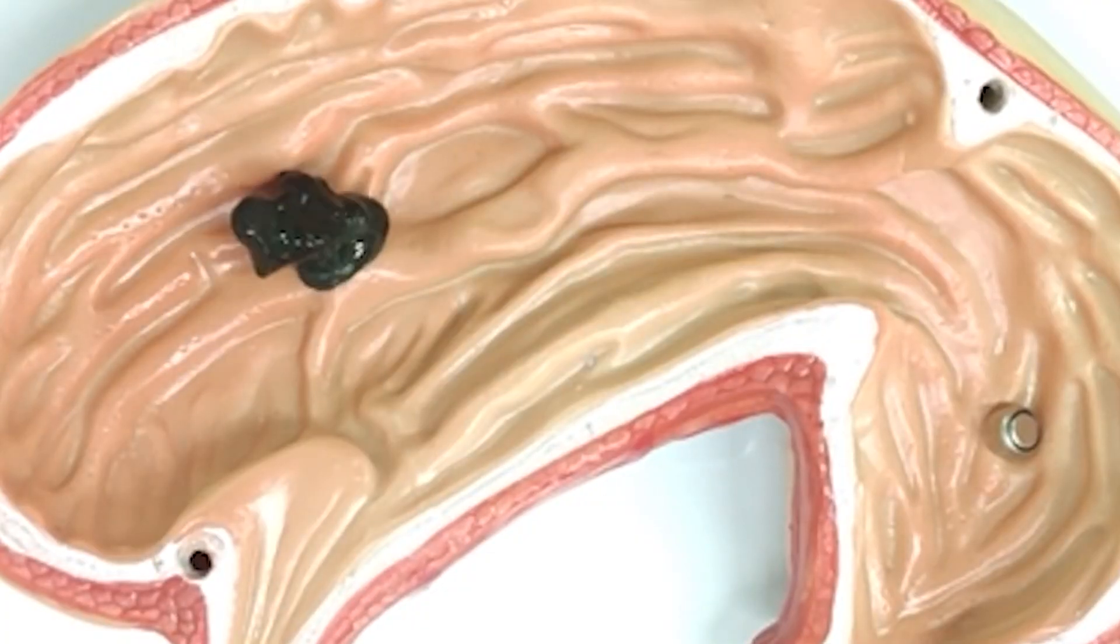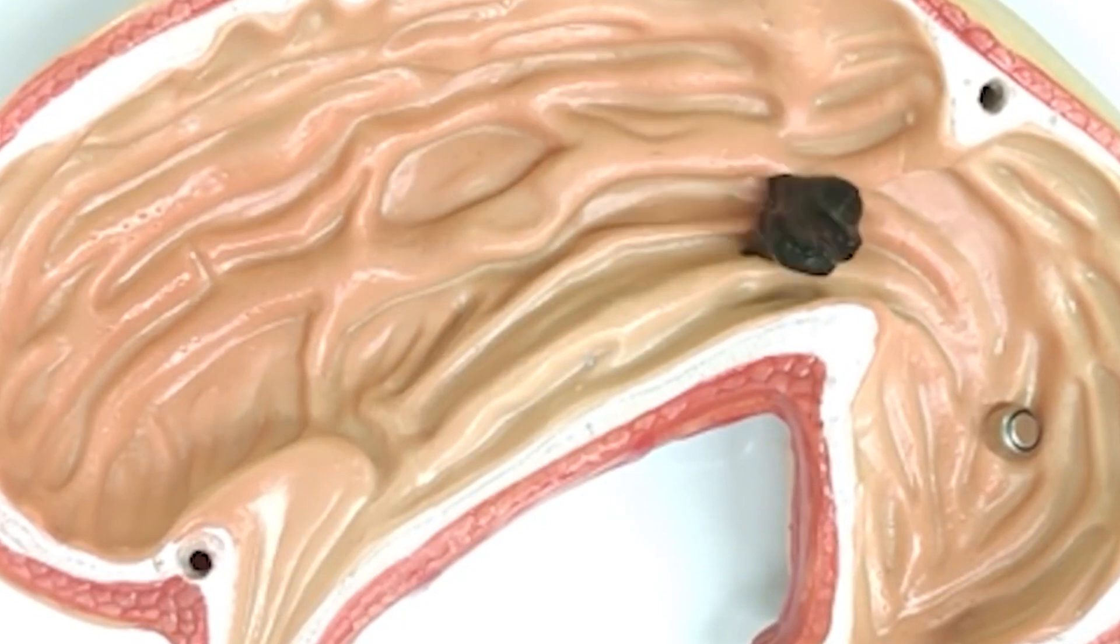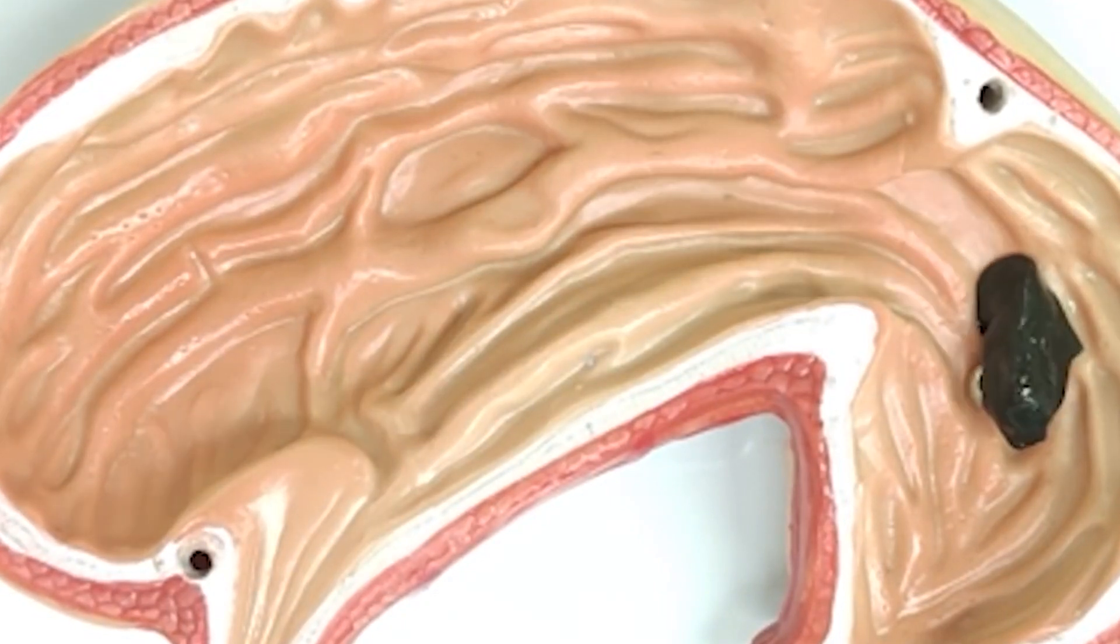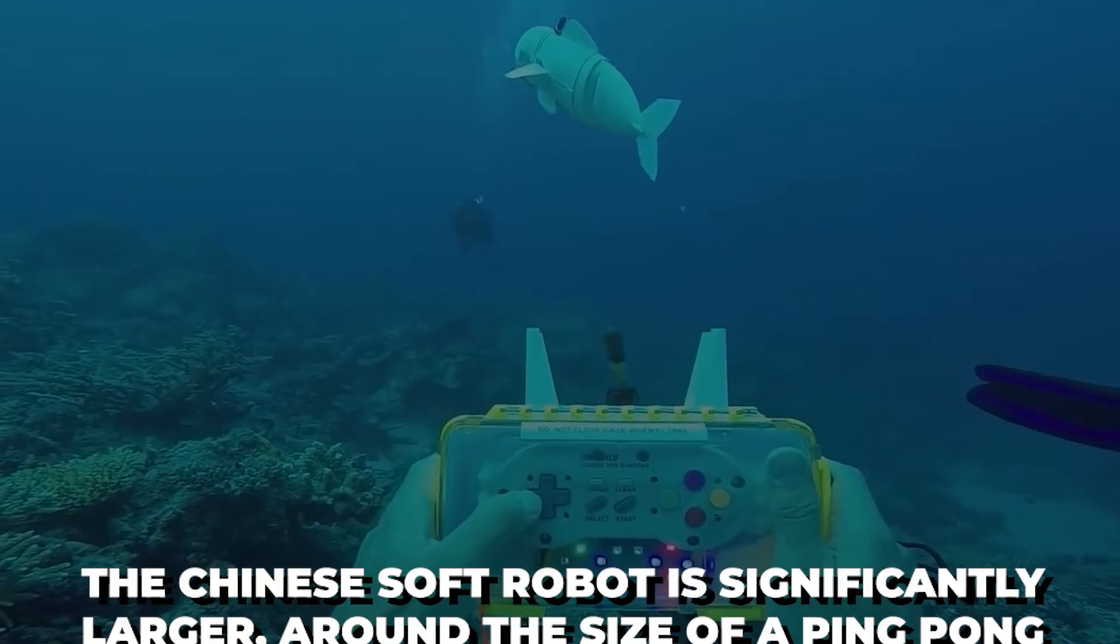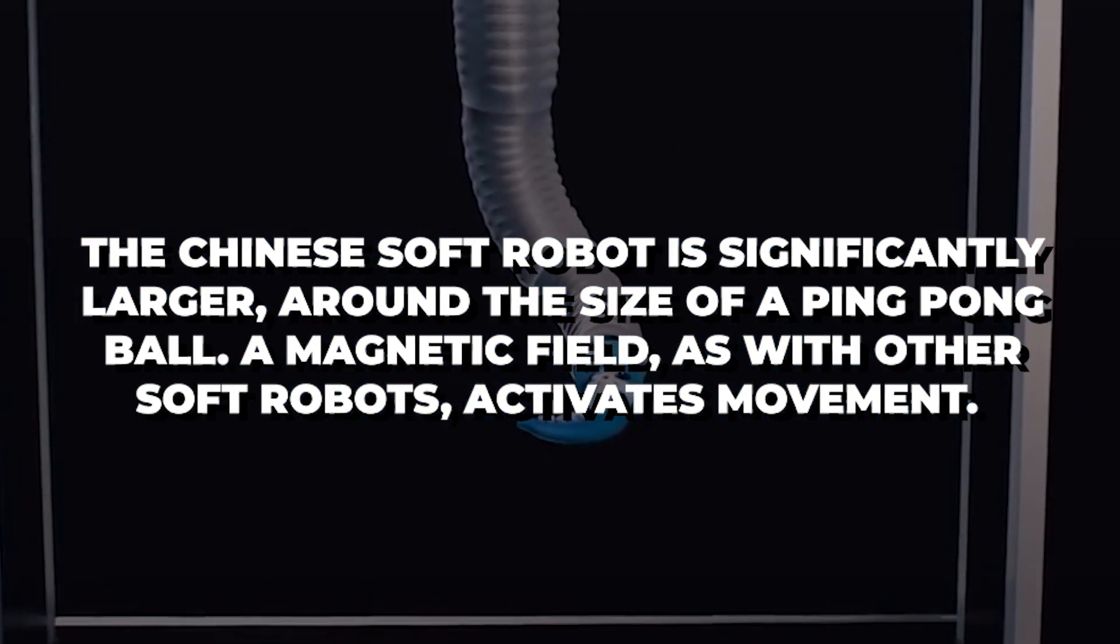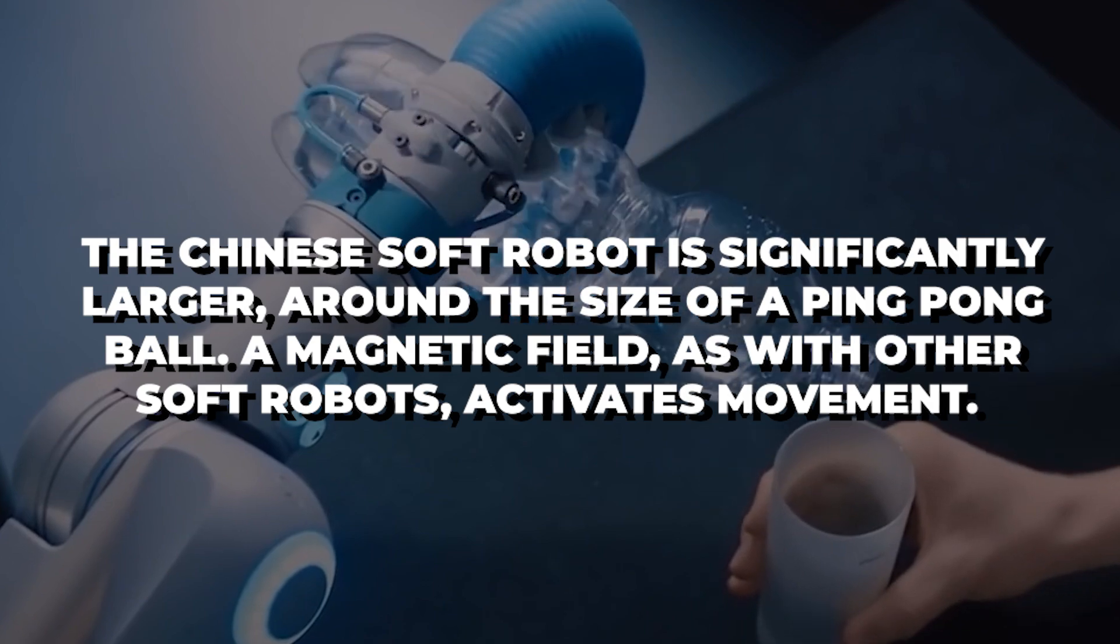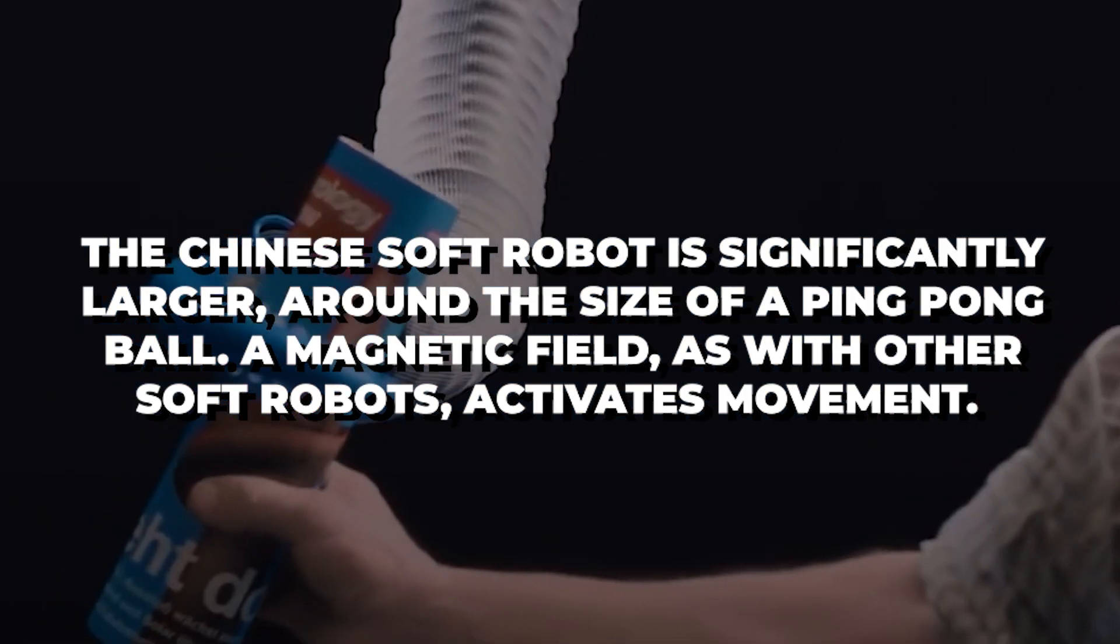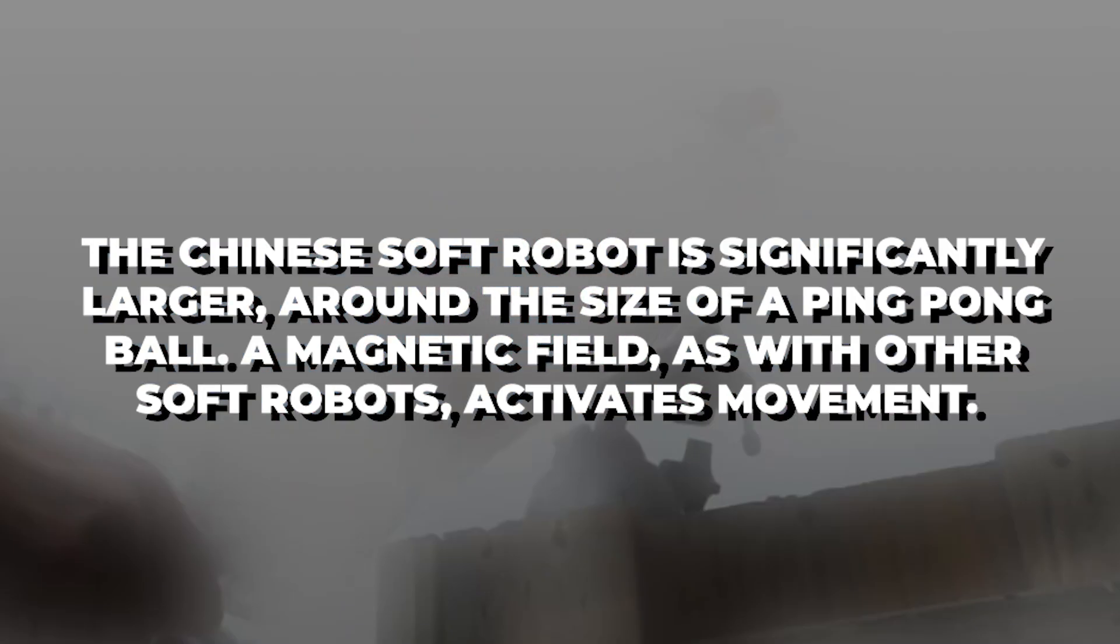Most soft robots designed for use in the body are incredibly small, allowing them to go via arteries and veins and into organs. The Chinese soft robot is significantly larger, around the size of a ping-pong ball. A magnetic field, as with other soft robots, activates movements.